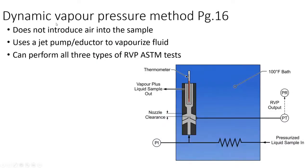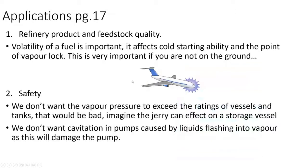Another version is the dynamic vapor pressure method, which does not introduce air into the sample. This uses a jet pump or inductor pump to vaporize the fluid, and it can perform all three types of RVP ASTM tests — the wet Reid, the dry Reid, and the LPG test. The pressurized sample comes in through an exchanger where it is heated, goes through an orifice where it vaporizes, and the vapor temperature and pressure are measured, recording the vapor pressure of the sample.